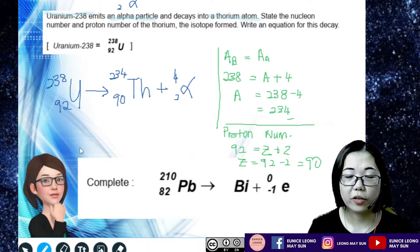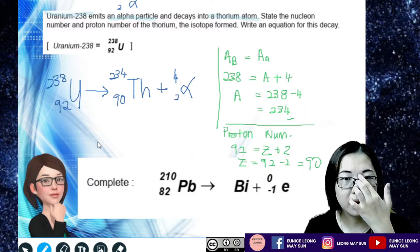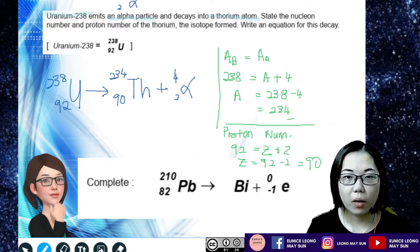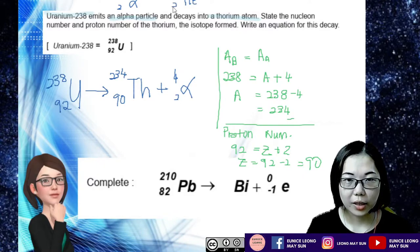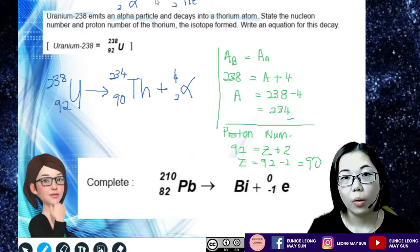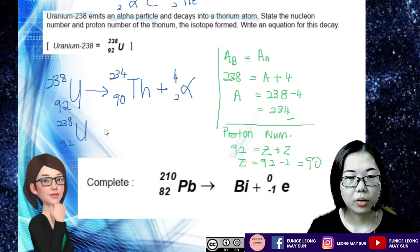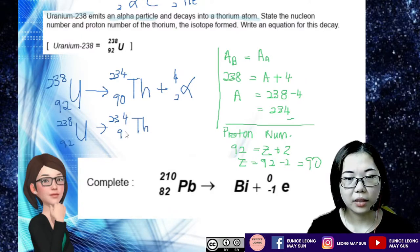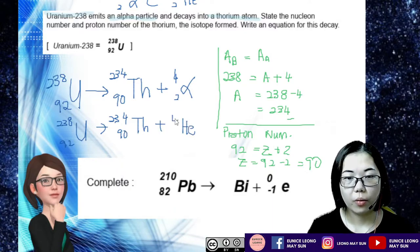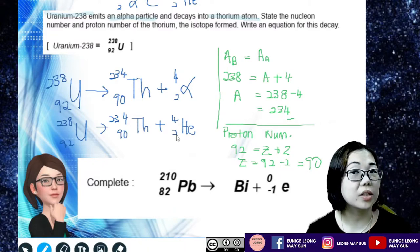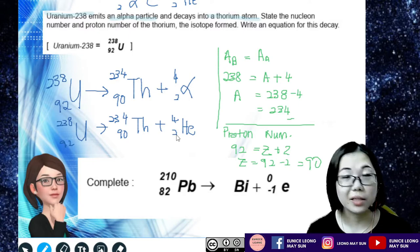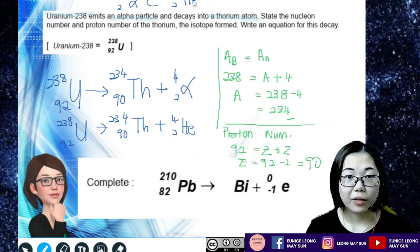So this is the equation for this alpha decay. Some students ask: do I have to write alpha, or can I write helium-4,2? Yes, you can write it as helium-4,2 or alpha-4,2. So the other equation would be: uranium-238,92 becomes thorium-234,90 plus helium-4,2. Either one is correct because alpha and helium are the same — it's alpha decay.